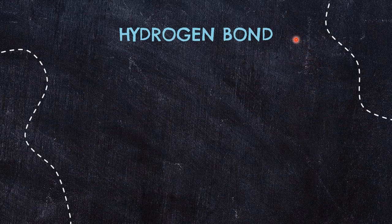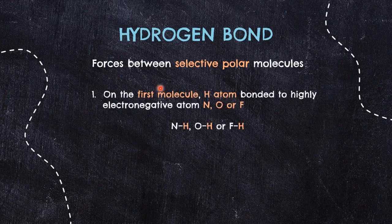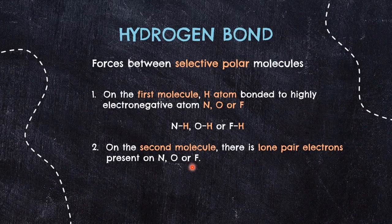Moving on to the third type of intermolecular forces, the strongest one: hydrogen bond. Hydrogen bond is a type of force present between selective polar molecules. Even though the interactions in hydrogen bonding are similar to dipole-dipole, they must obey two essential requirements. First, the dipole should be generated by N–H, O–H, or F–H bonds — hydrogen must be attached to one of these highly electronegative atoms: nitrogen, oxygen, or fluorine. Second, the neighboring molecule must have a lone pair present on either nitrogen, oxygen, or fluorine. The neighboring molecule can be the same or a different molecule.